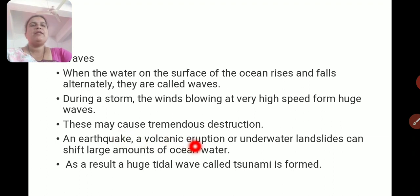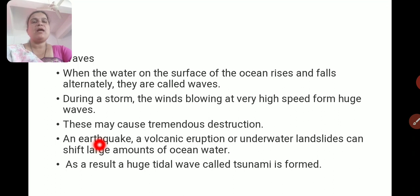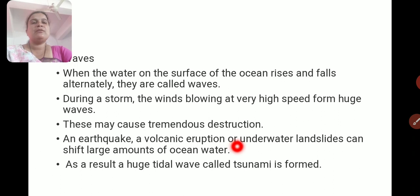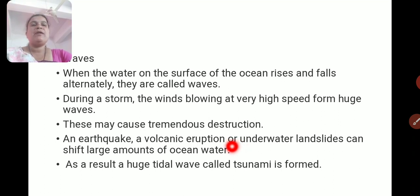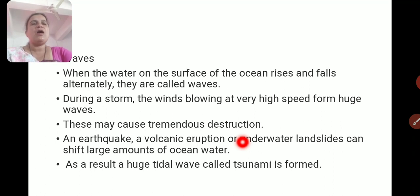An earthquake, a volcanic eruption, or underground landslides can shift large amounts of ocean water. Due to an underwater earthquake or underwater landslide, ocean water rises and falls at very high speed, causing destruction near the sea coast in terms of both property and loss of life. We can take an example like tsunami. A huge tidal wave called a tsunami is formed, and we know very well how much destruction takes place due to these high-speed waves.